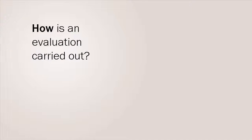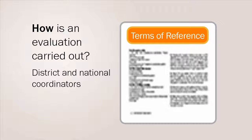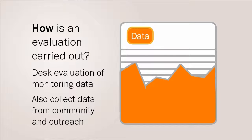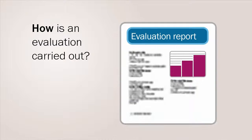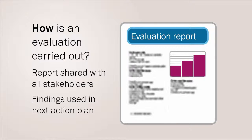How is an evaluation carried out? Terms of reference, or the scope, are agreed between the district and national coordinators and the external evaluators. Data from all monitoring activities is made available to the evaluators, who carry out what is known as a desk evaluation. The evaluator will also collect data from community and outreach if needed. A report is then compiled and shared with all the stakeholders, and the next action plan takes the report's recommendations on board.